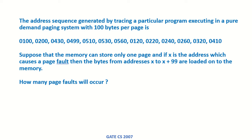The address sequence generated by tracing a particular program executing in a pure demand paging system with 100 bytes per page is given. These are the addresses that are being generated by the processor during the execution of a program.